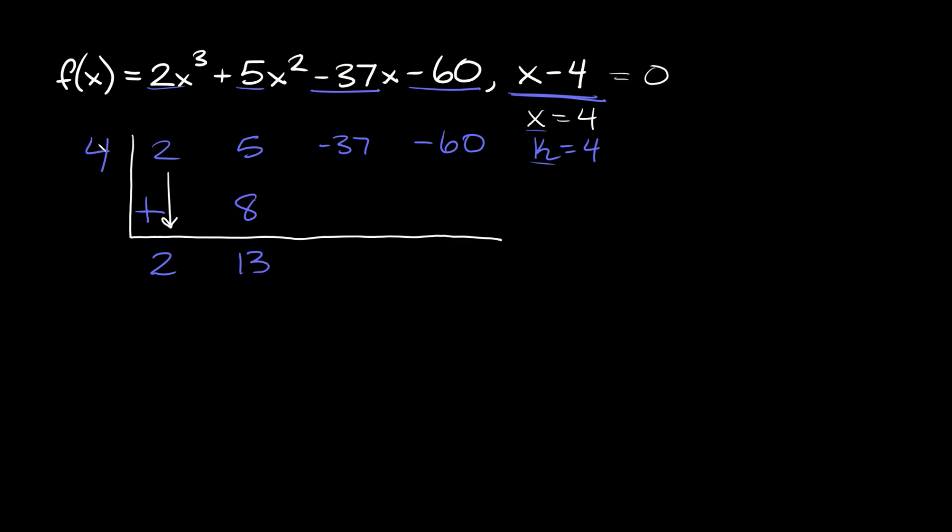To find the next one, 4 × 13, that's equal to 52. So -37 + 52 = 15. The next one here is 4 × 15, which is 60. And -60 + 60 = 0.